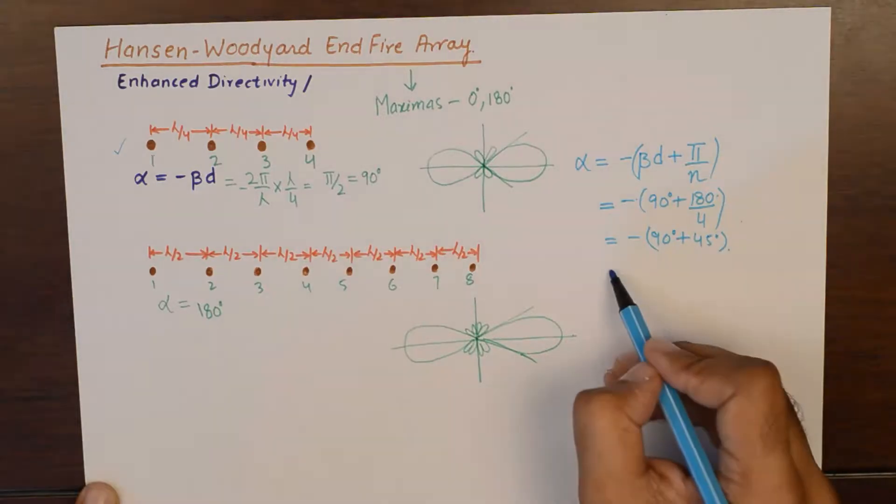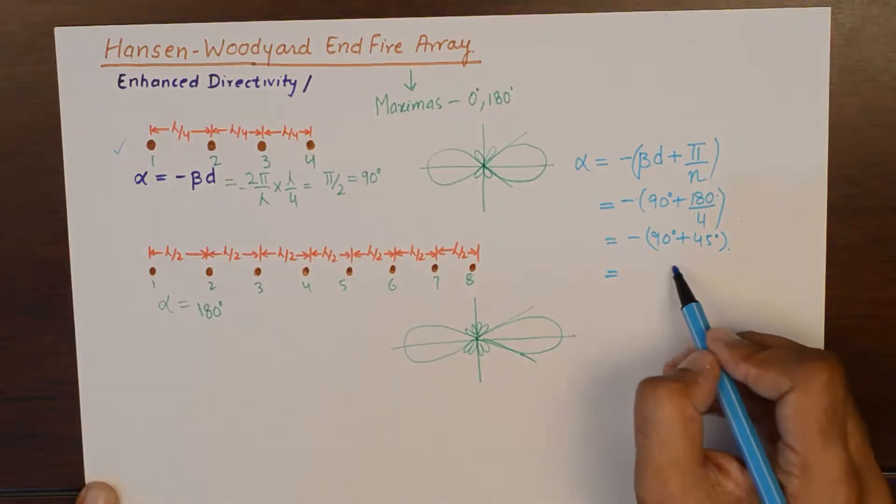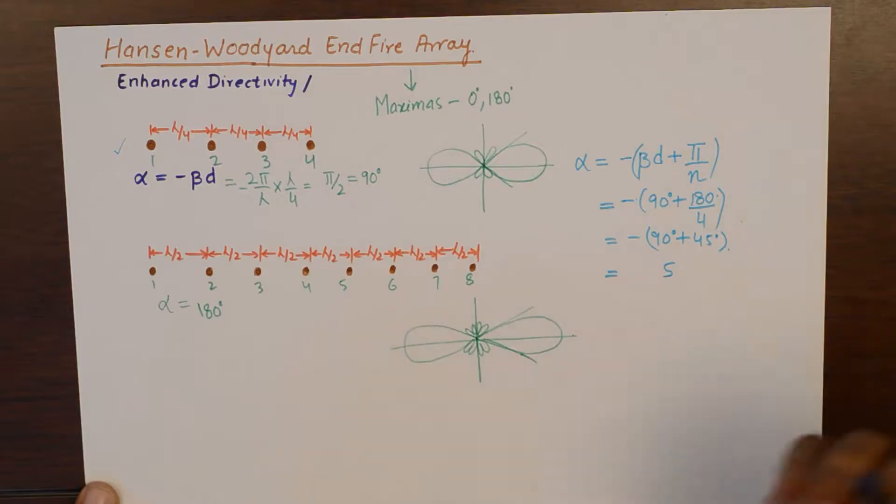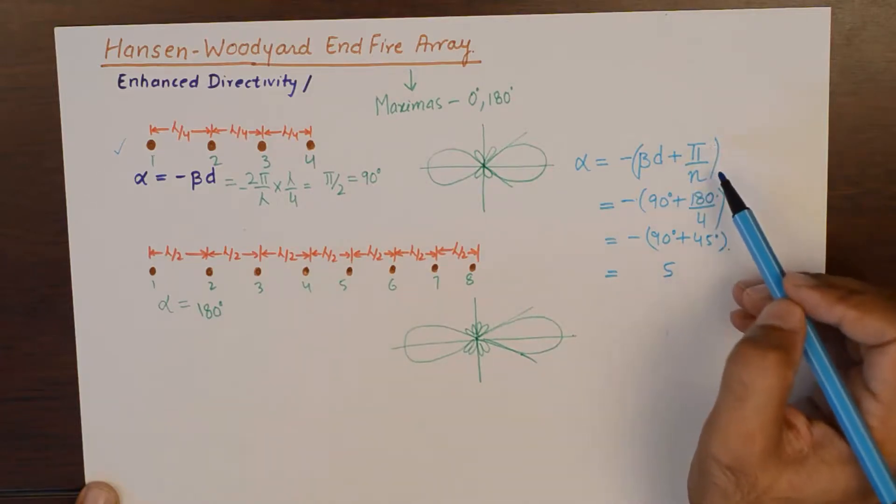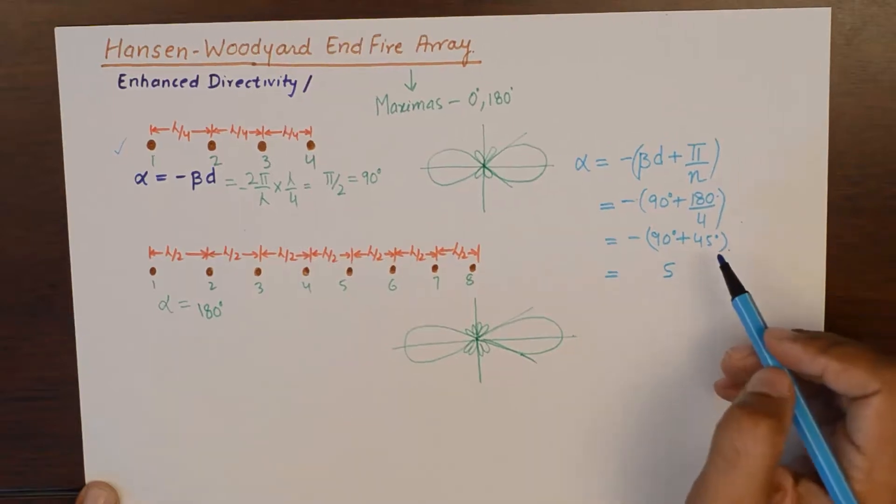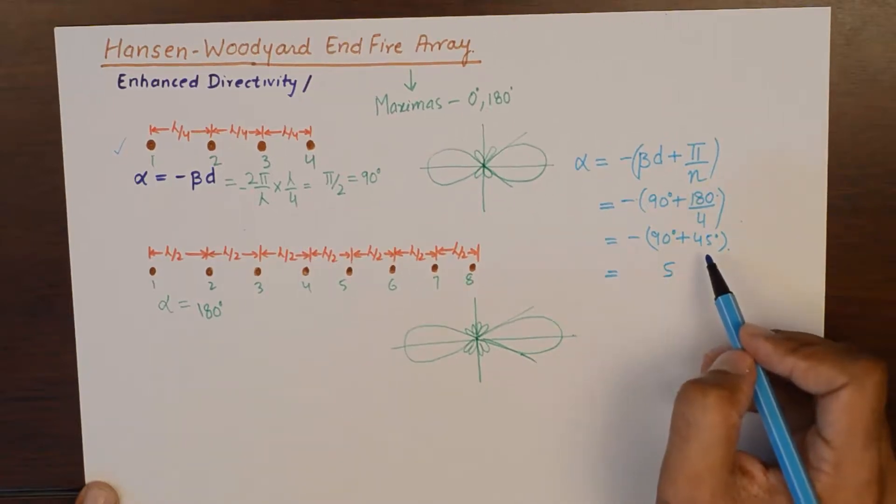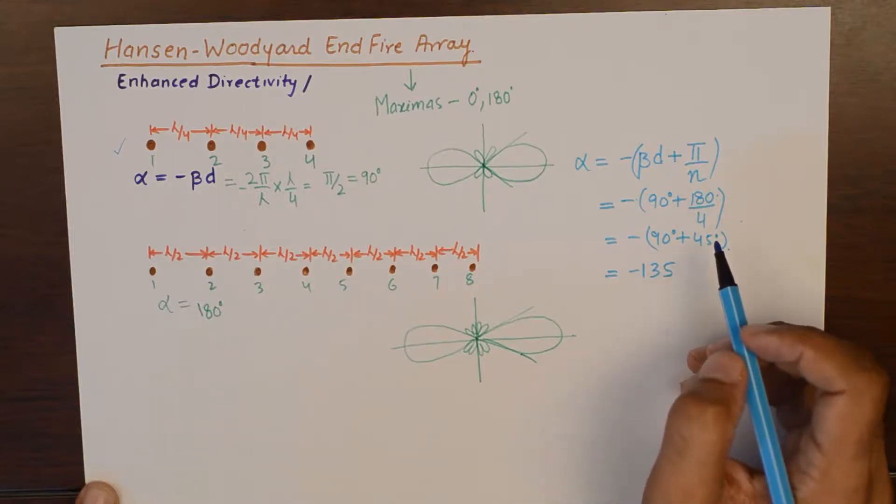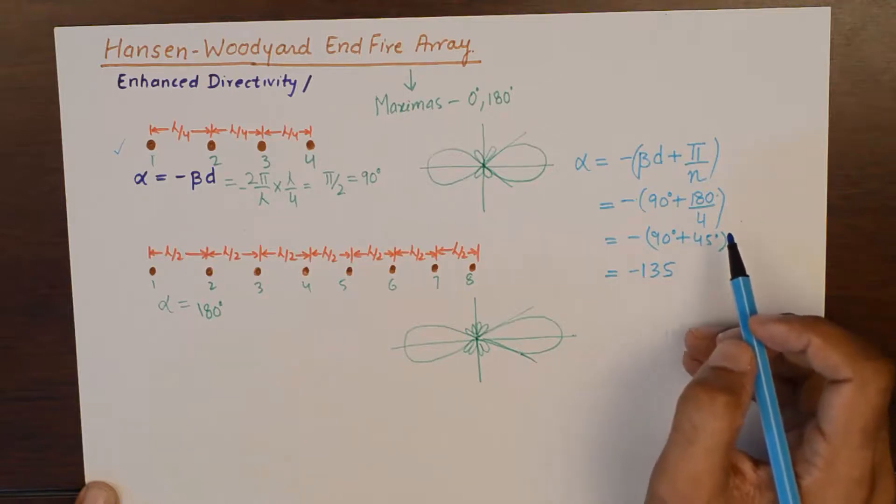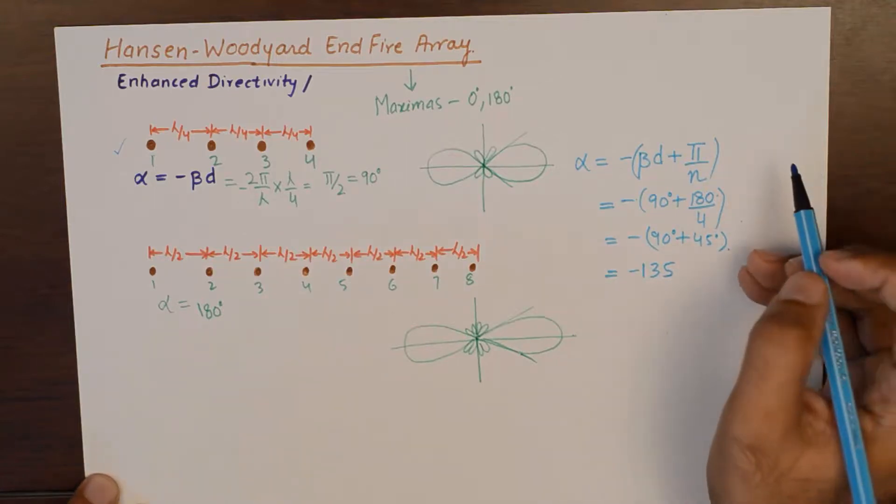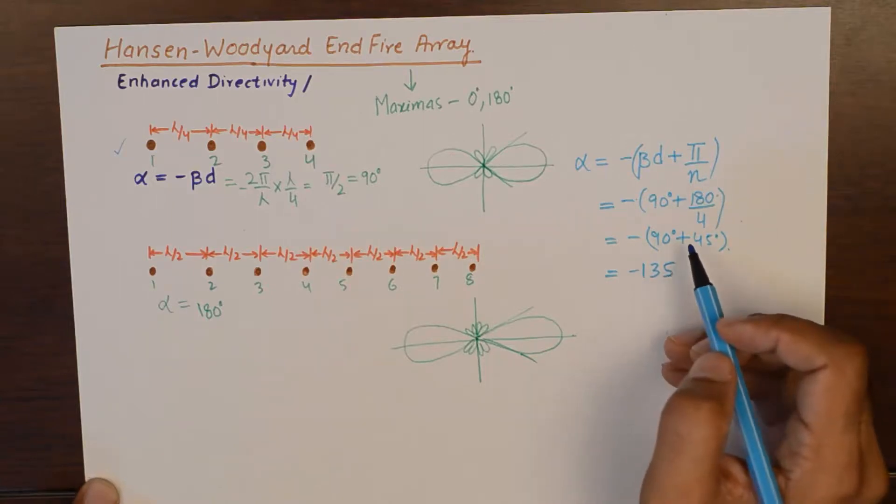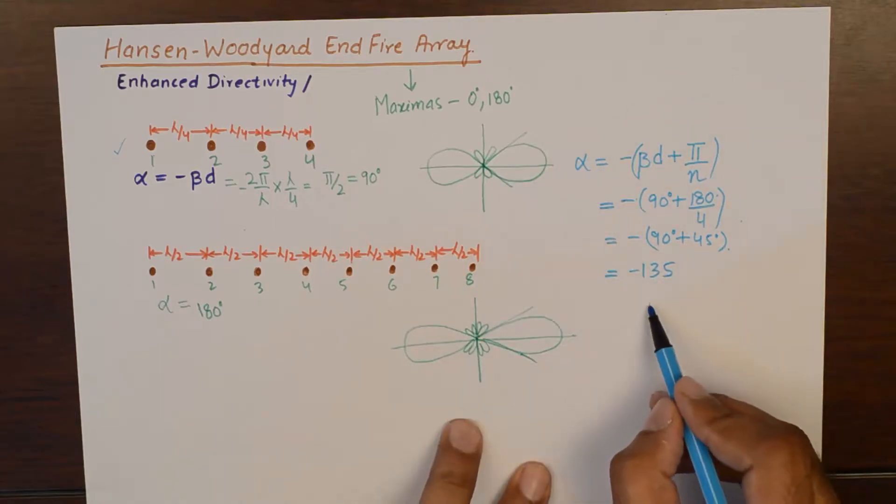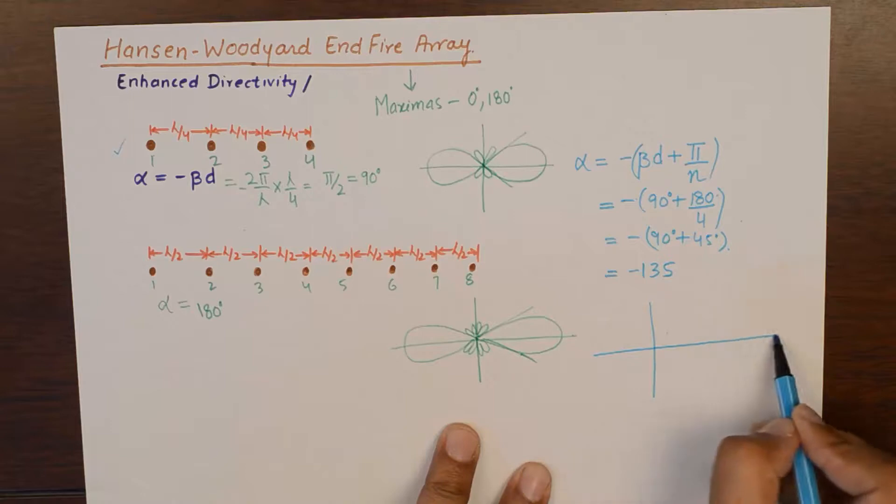So, Hansen-Woodyard suggested that the progressive phase shift between the elements be increased by a factor of pi by n, thereby making the array more directional and trimming off the side lobe. So, if we go on to draw the radiation pattern for this modified end-fire array, it should be something like this.